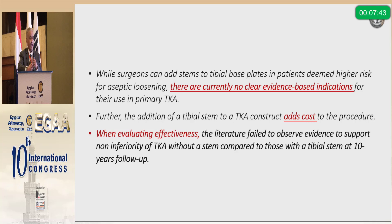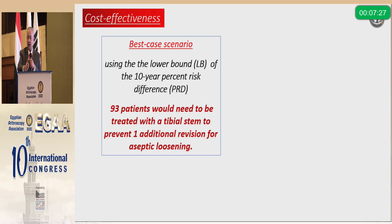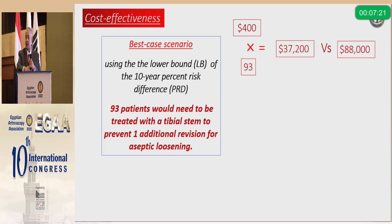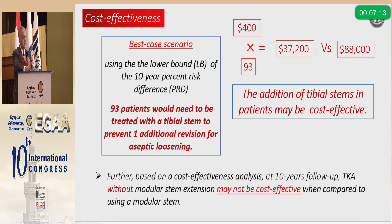While it adds cost to the operation, evaluating the effectiveness in the best-case scenario using the lower bound of 10-year percent risk difference, 93 patients would need to have a tibial stem to prevent one additional revision. The cost of 93 stems would be $37,000, compared to the cost of one revision at $88,000 — so using a tibial stem is cost-effective. Applying the same analysis, a total knee without a modular stem extension may not be cost-effective.